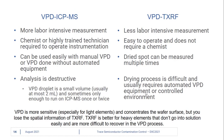VPD as a wafer surface sampling technique is more sensitive overall, especially for light elements, and concentrates the entire wafer surface. But we lose the valuable spatial information gained from direct TXRF. Direct TXRF is also better for heavy elements like ruthenium and gold, which don't go into solution as easily and are more difficult to recover in the VPD process.